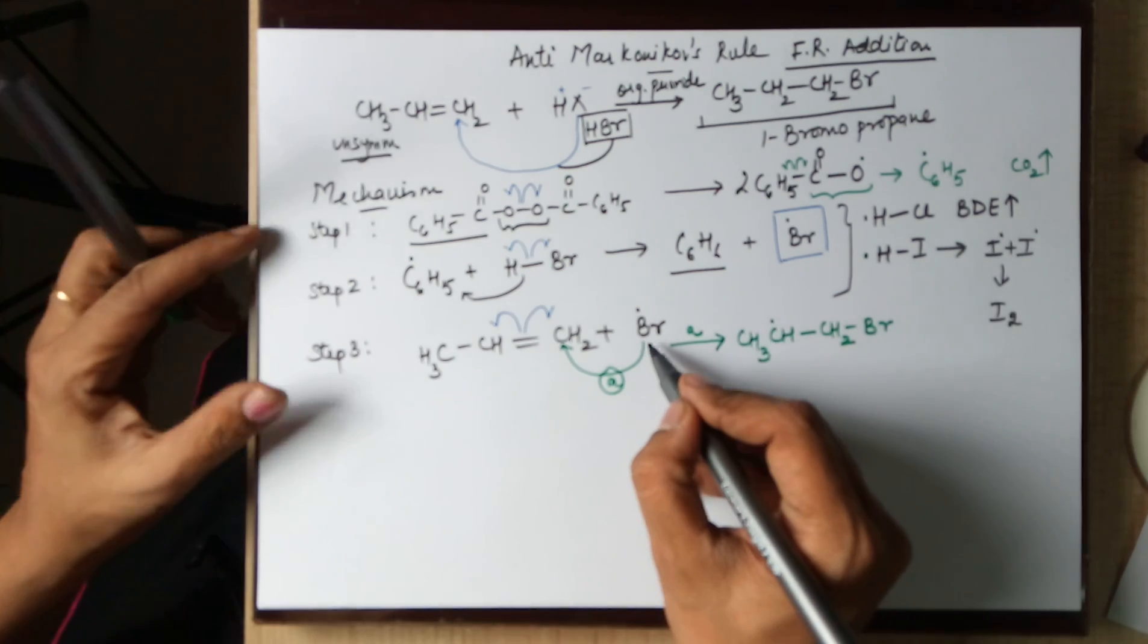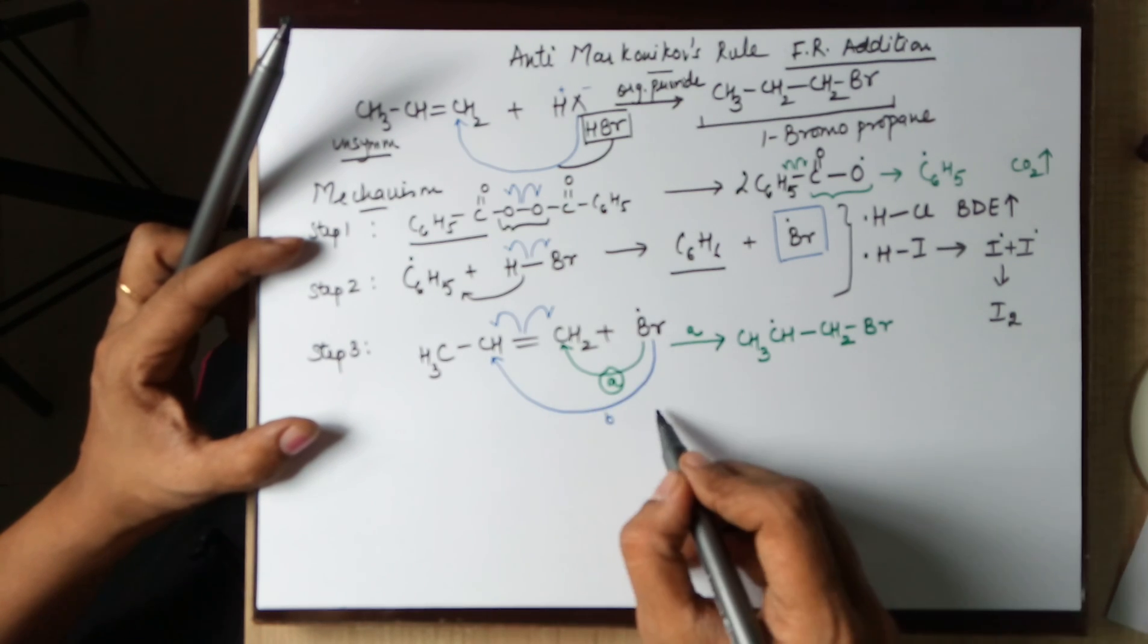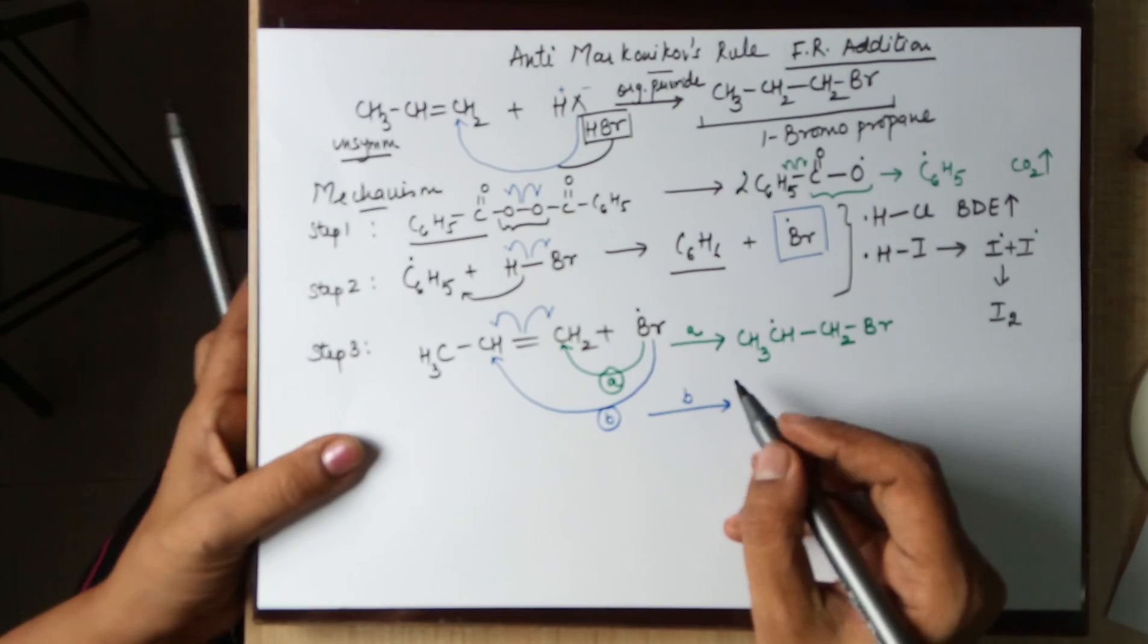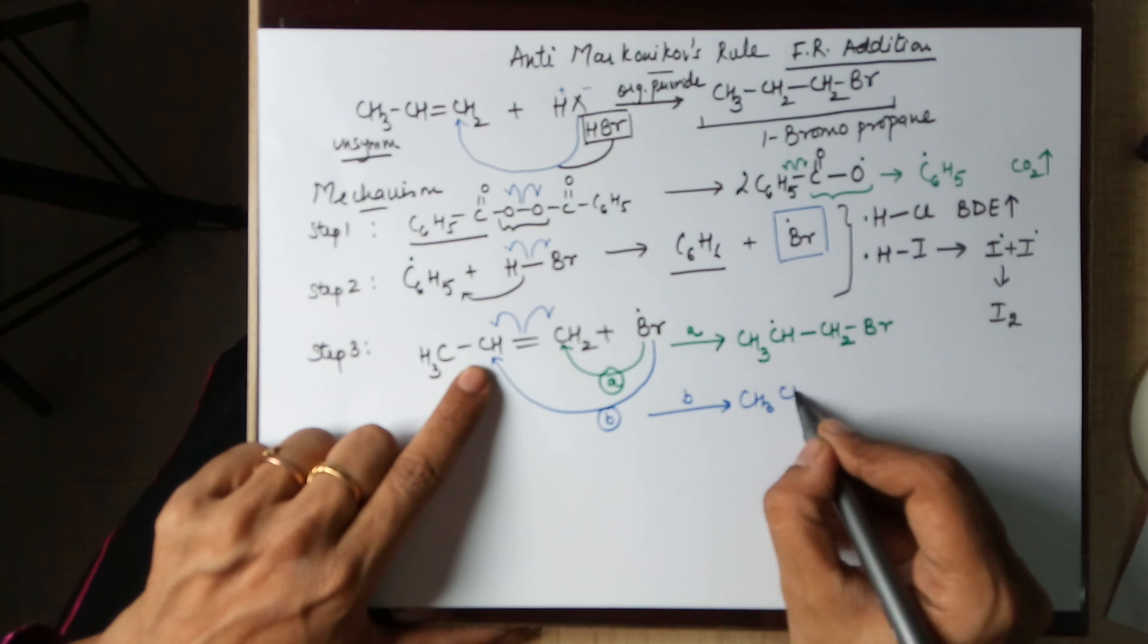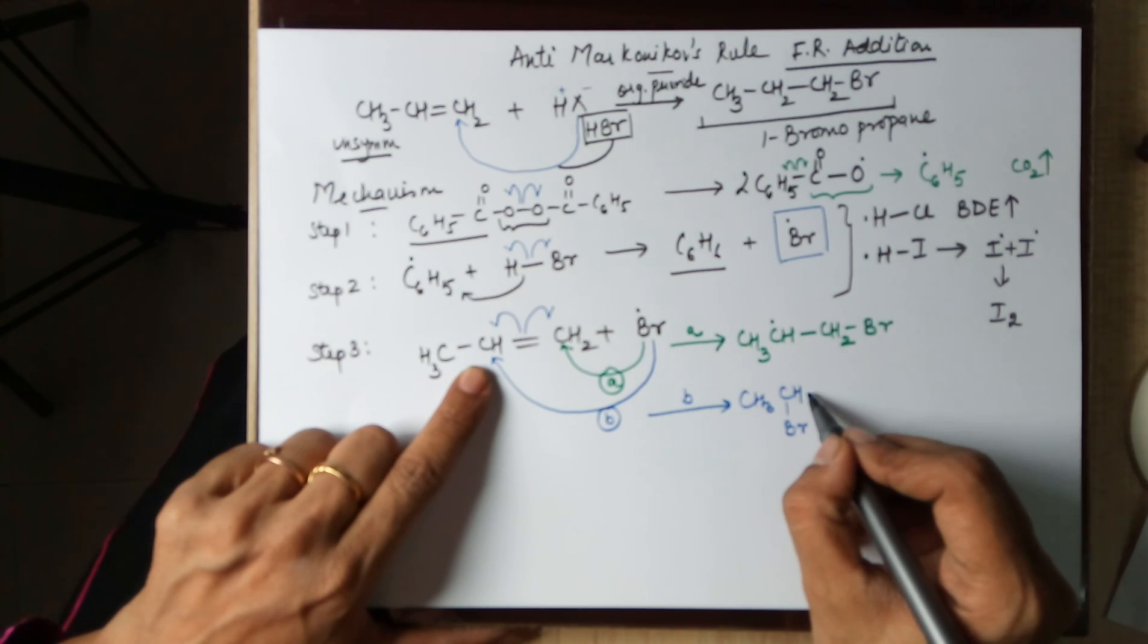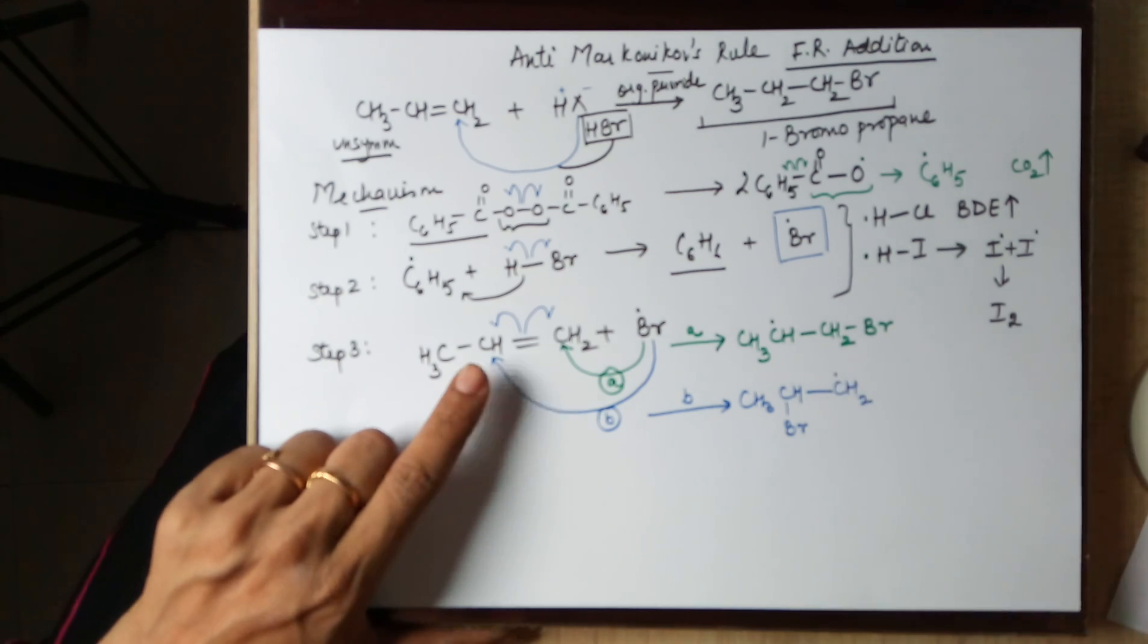Now, had it been that your bromide would have gone to this carbon, that becomes your B route. Taking to the B route, in this case, you have a CH3 unaffected. The free radical formed here is taken up by the bromide to form a bond. Therefore, your bond cleaves, while your CH2, you are left with the free radical.